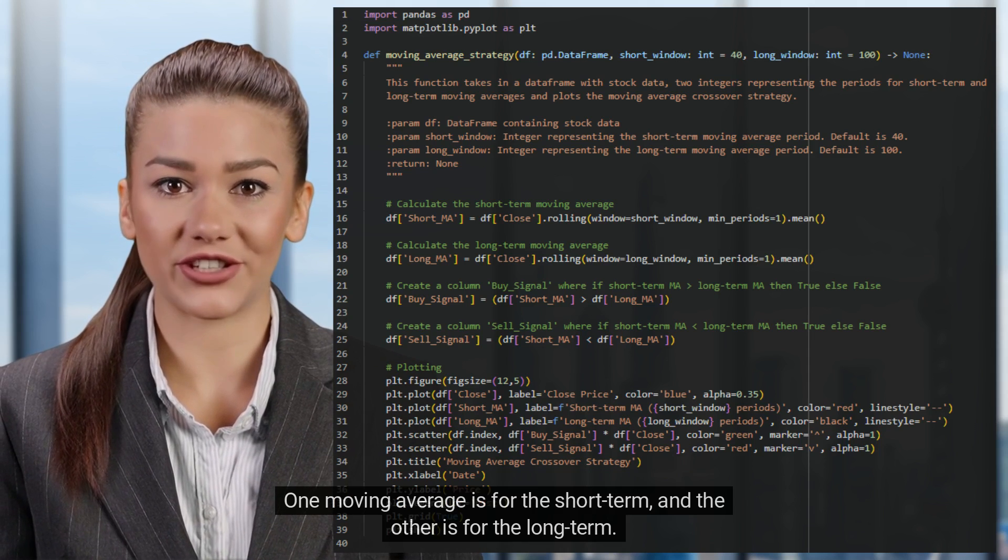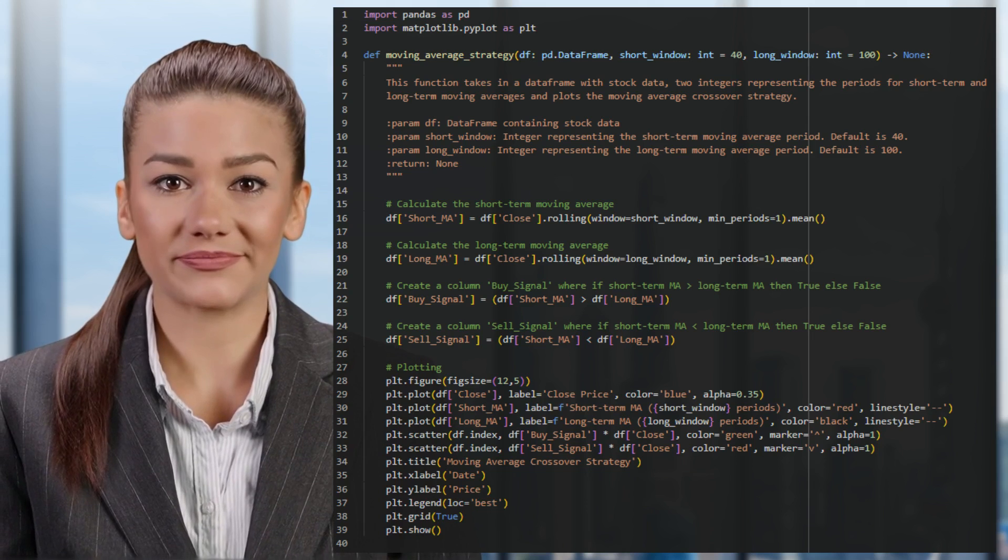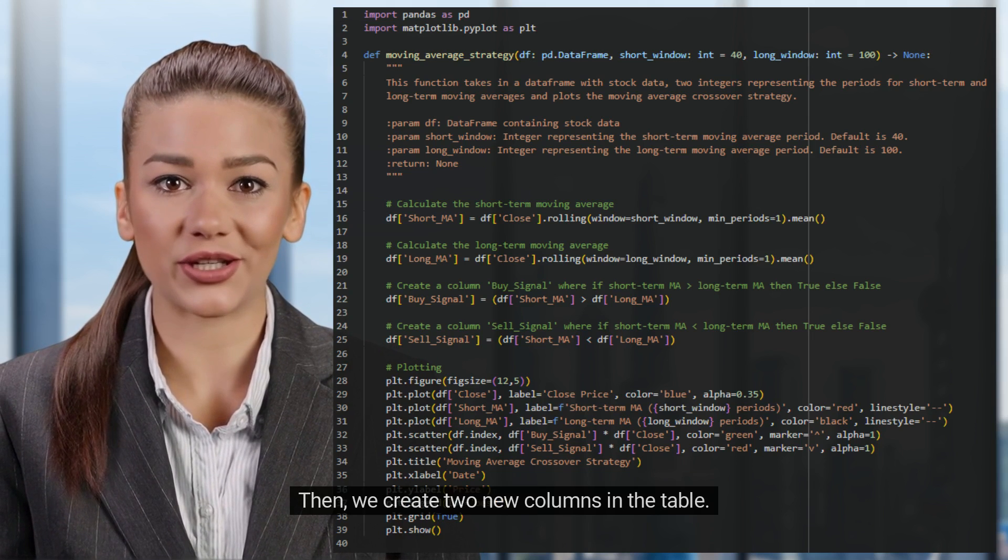One moving average is for the short-term, and the other is for the long-term. Then, we create two new columns in the table.